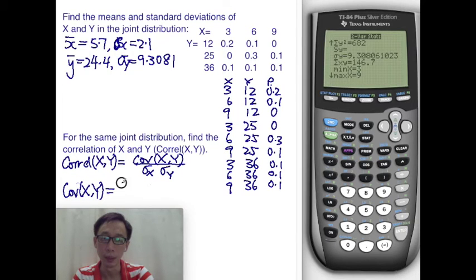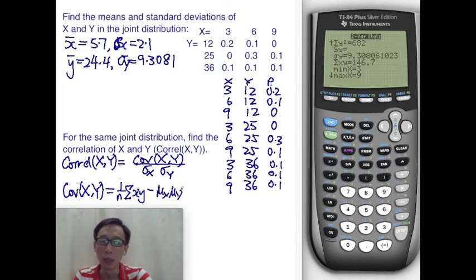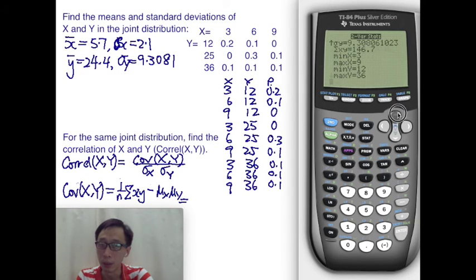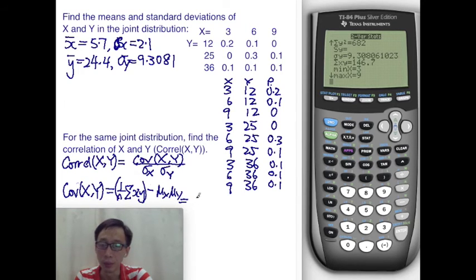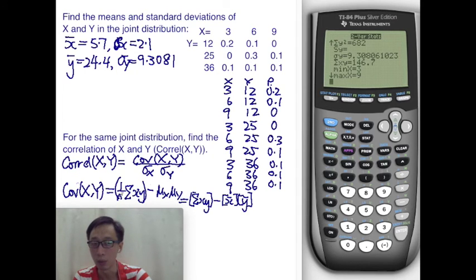And for that, recall that it is 1 over n sum XY minus μ_X μ_Y. But in the case of calculator, because of joint distribution, we have already entered the probability values there. So when we pull out the sum XY, we get 146.7. This is already inclusive of the division by n. So we just need to call out sum XY and call out X bar and call out Y bar. The sum XY already has the probability weightage, which is equivalent to having divided by n. Anyway, in this given data here, we don't know what's the population size, so there's no way to divide by n anyway. So we'll just call out sum XY, 146.7, minus X bar times Y bar.